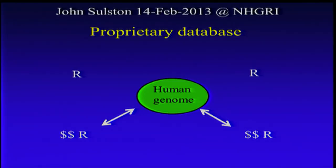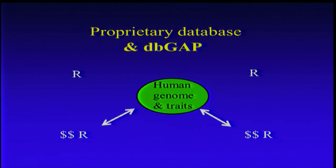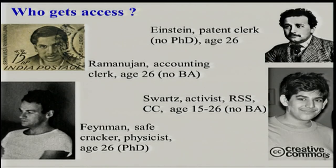John Sulston came in electronically, and he had this diagram about the threat of proprietary databases — that only institutions with money would get access to the human genome. We did as much as we could to prevent this from happening by putting as much as possible into the public domain. I would generalize this slightly: dbGaP covers not just the human genome but human genomes plus traits, making it even more useful, and it still has the possibility that only exceptionally wealthy institutions have access. So we ask, who should get access?